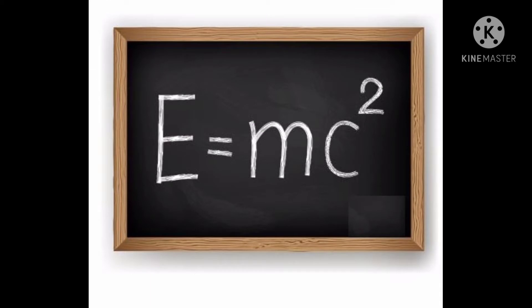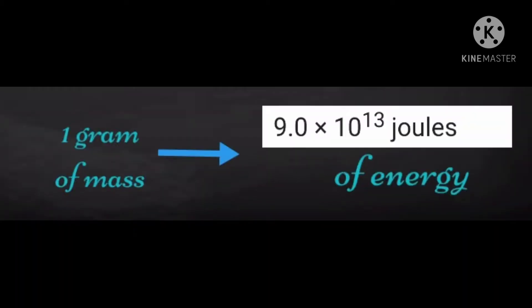The difference in mass is converted into energy in accordance with Einstein's equation: E equals mc squared.